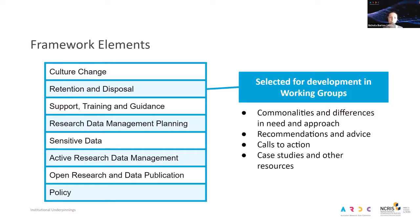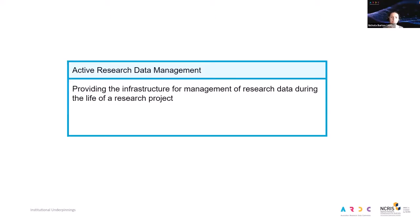I'll take you through each of the eight elements quickly to give a light definition of what each covers. We obviously don't have time for me to take you through the entire framework content, but this background may help you select which elements are most relevant for you to look at. Active research data management is about universities providing infrastructure for the management of research data during the life of a research project — from where the project begins and data is acquired or collected through to the end of a project where data no longer needs to be frequently accessed.